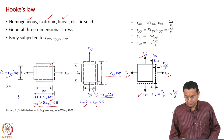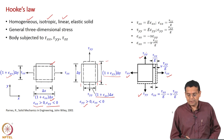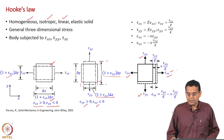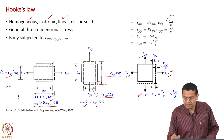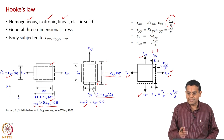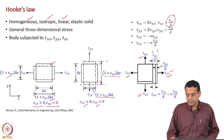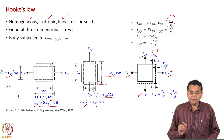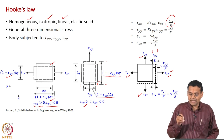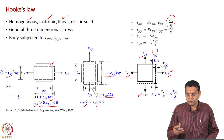If there were no normal stress along y direction, then because of normal stress along x alone, the normal strain along x would be tau_xx / E. That would have been the increase in length along x. But because there is also normal stress along y, there is some decrease — some contraction — along the x direction. How do we find that value?